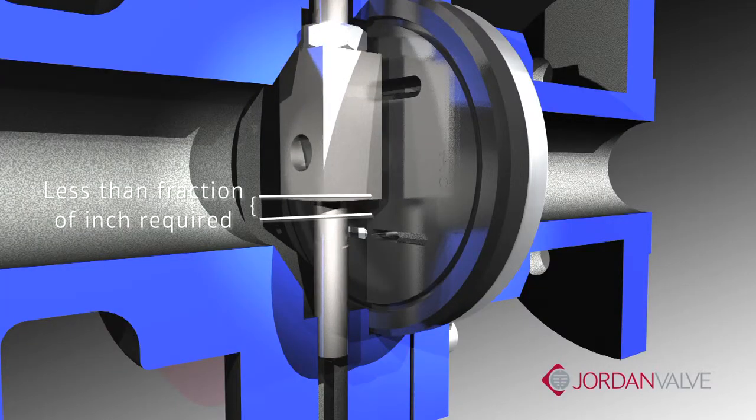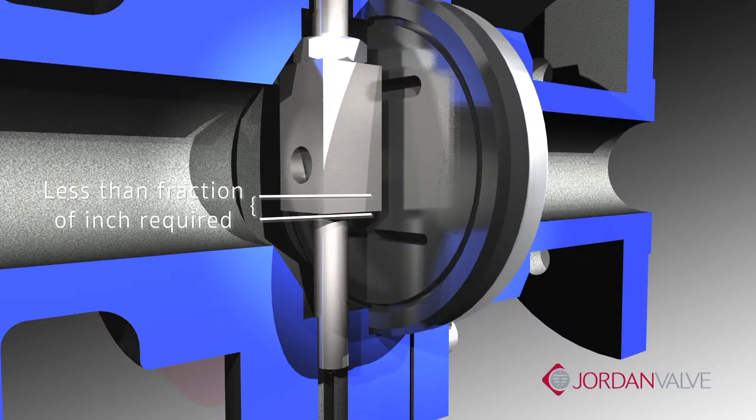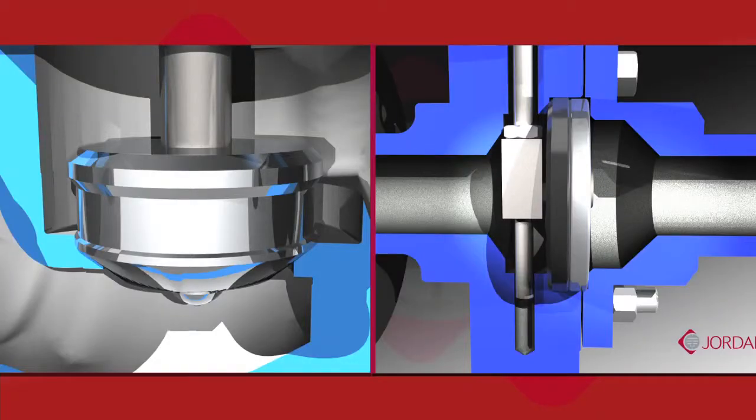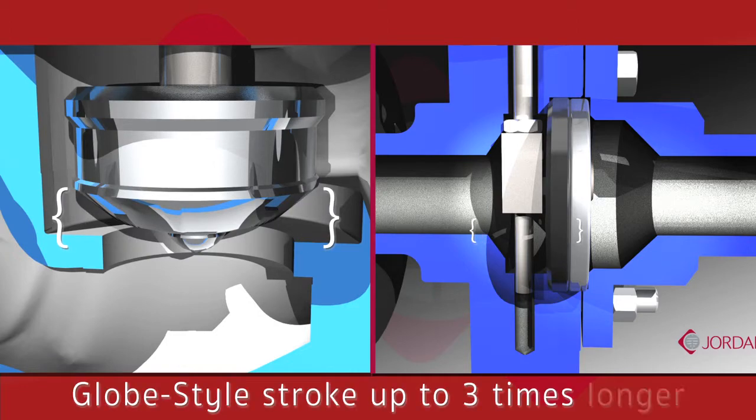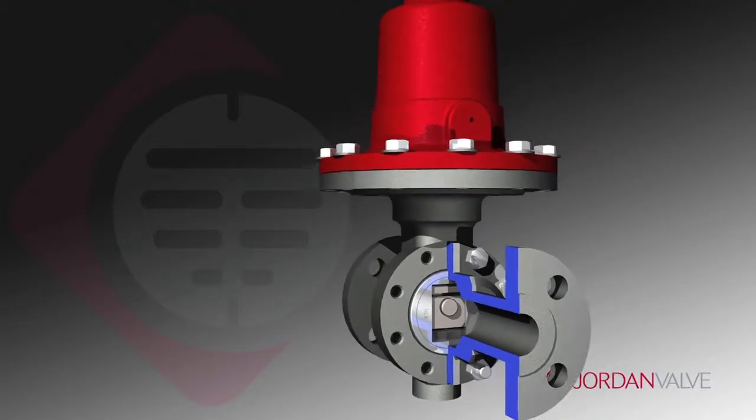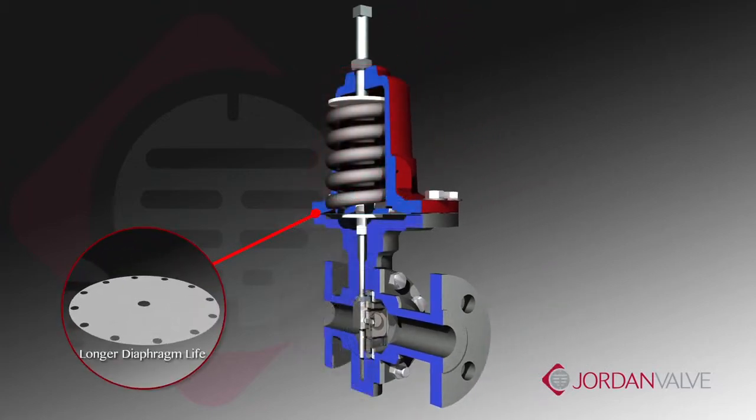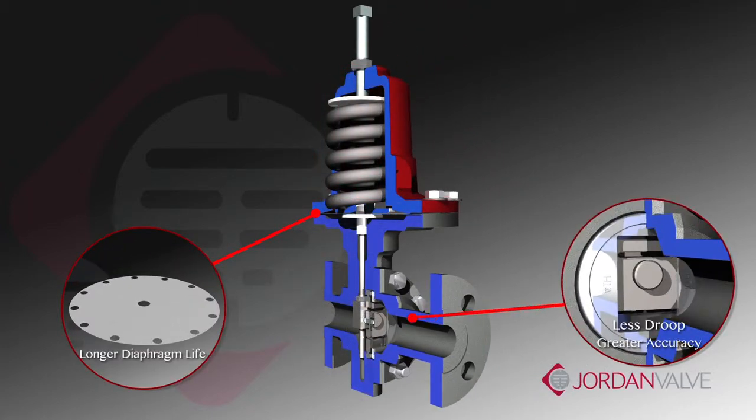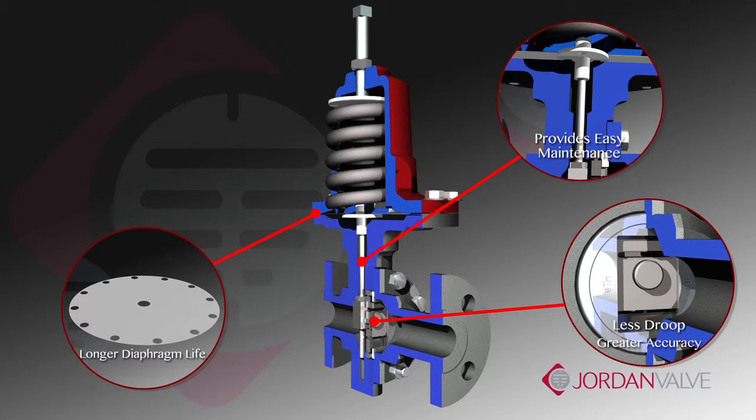You'll notice that the valve moves from full open to full closed in a fraction of an inch, maintaining a very short stroke. In comparison, the stroke length of a similarly sized globe-style valve is three times longer. A short stroke also results in longer diaphragm life, has less droop and greater accuracy, and provides easy maintenance.